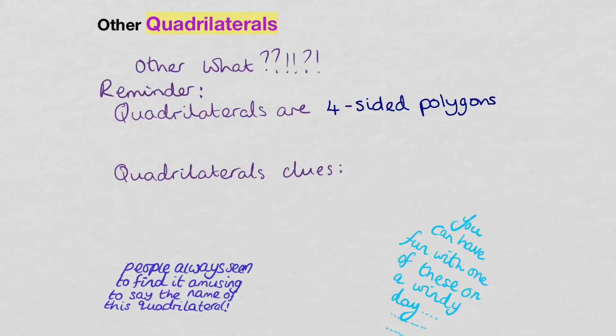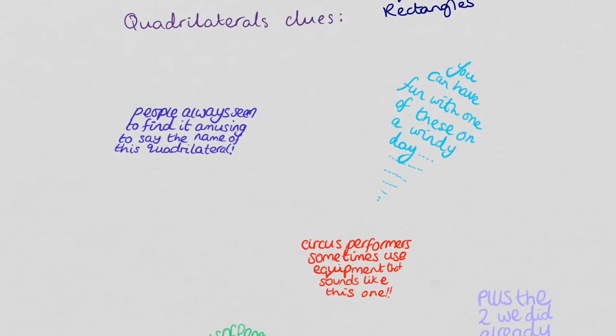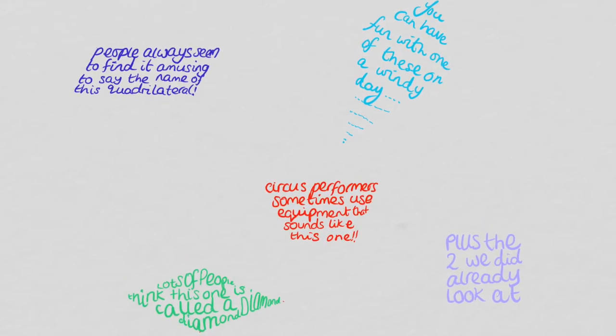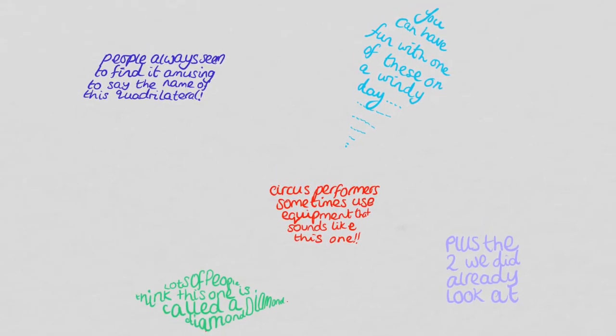So apart from looking at squares and rectangles that we've already considered, we've got some other quadrilaterals. And I've got some clues here. I'm going to let you have a think about these ones. So take a moment. Pause this if you want. What I've done is put a clue in the shape of the quadrilateral.